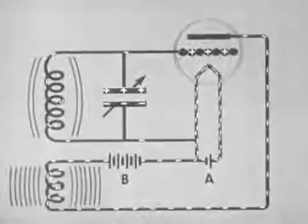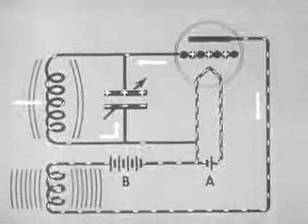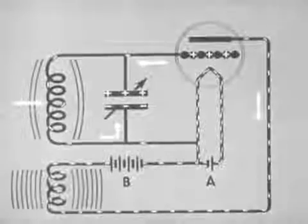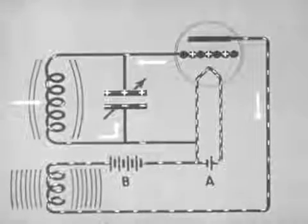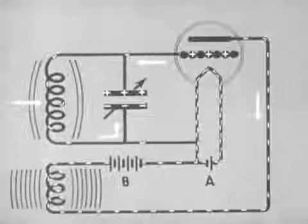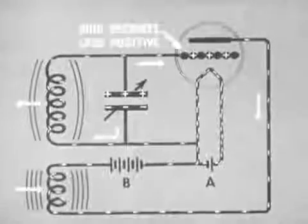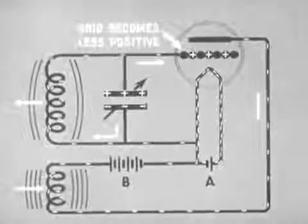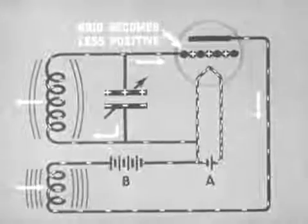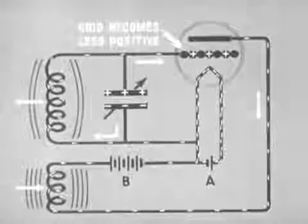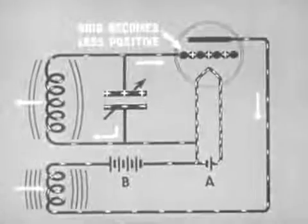When the plate current reaches maximum, there is no change in the field, hence no current is induced in the grid coil. The field of the grid coil collapses and helps to charge the condenser. Now the condenser discharges and the radio frequency current in the grid circuit changes direction; the grid becomes less positive and this reduces the plate current. The collapsing field of the plate coil assists in building up the current in the grid circuit.